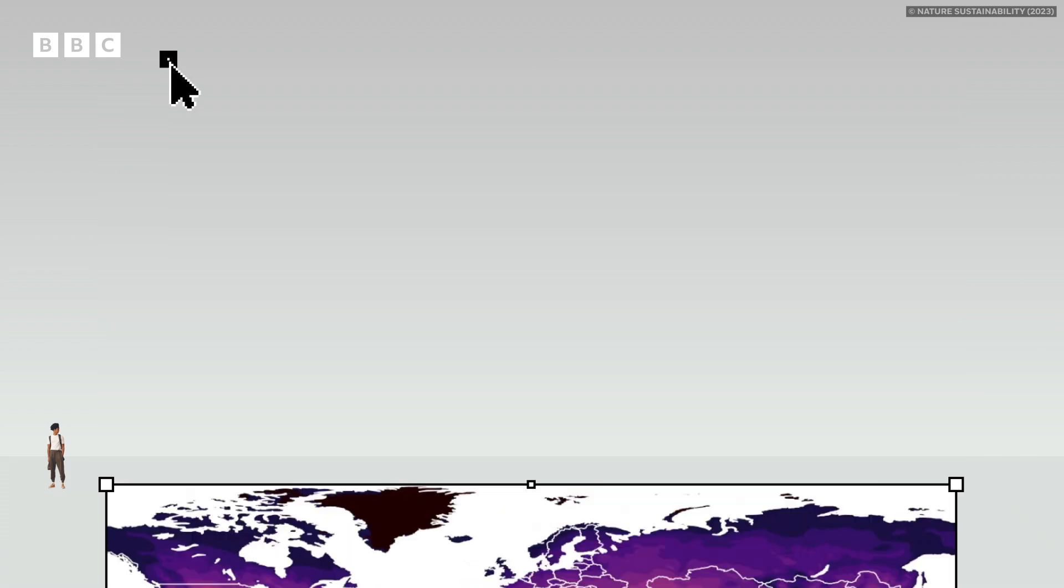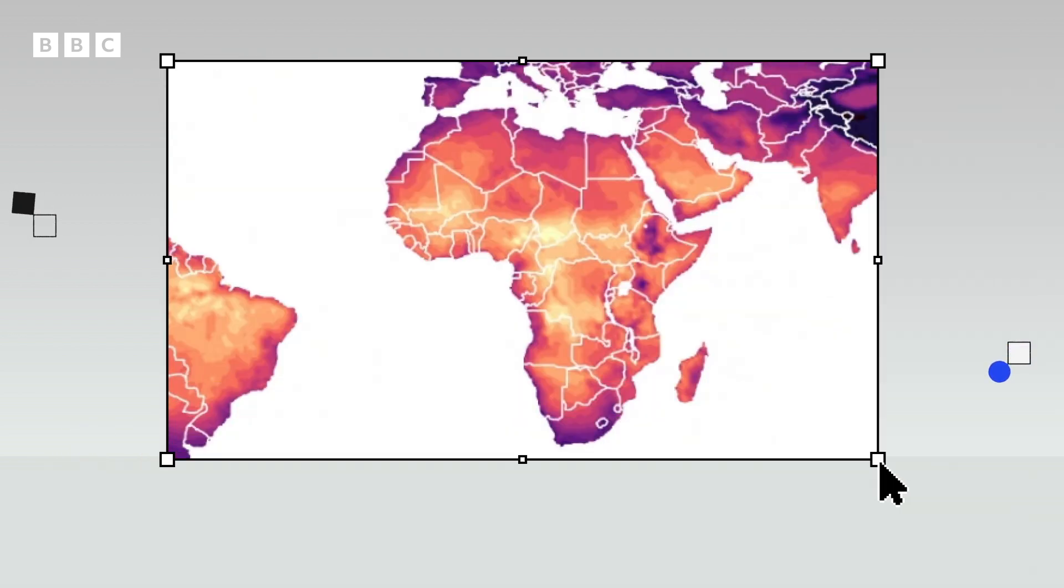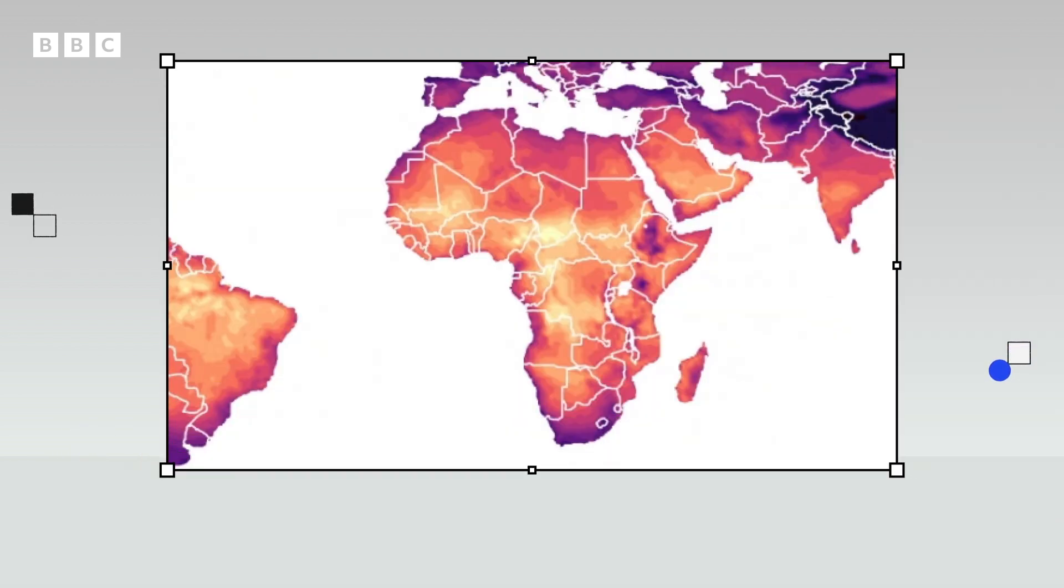An Oxford University study showed that if average global temperatures missed the 1.5 degree target set by the Paris Agreement and hit 2 degrees, nations already facing heat waves, like those in Central Africa, will see the most extreme temperatures.